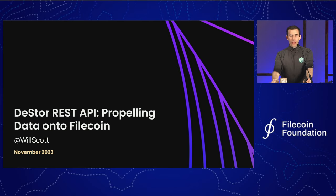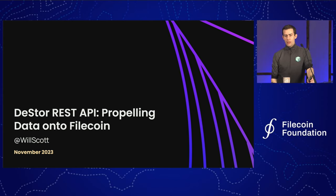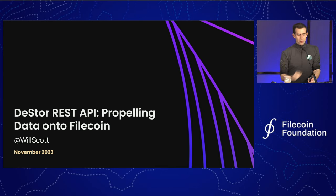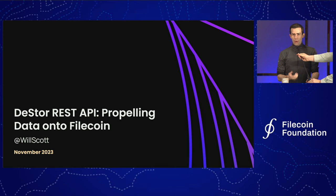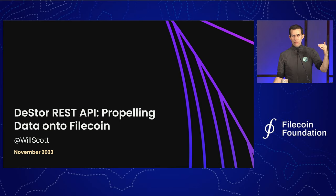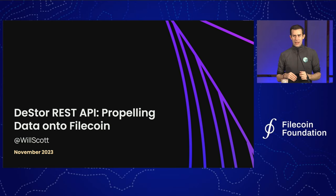I'm going to talk about a couple things over the next half hour. The first is the DStore REST API, which is a project that's actually come together from several different teams around the Protocol Labs network. The thought here is really about making sure that the interface to Filecoin — how you're getting data in and out of Filecoin — is a reasonable interface that people are happy to build on. How do we get that set of nuances structured so that you can get started really quickly and bring in the additional pieces that differentiate Filecoin, but you don't have to understand everything.